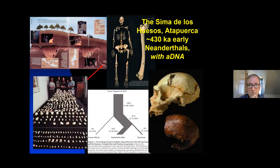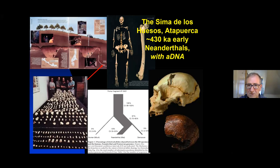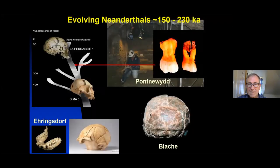The Sima de los Huesos material is so important — a wonderful sample of some 7,000 fossils found deep in this chamber in the Atapuerca cave system. Remains of probably 29 individuals, most of them adolescents or young adults, clearly show Neanderthal features morphologically: the teeth look very Neanderthal, there are Neanderthal features in the back of the skull and even the face, confirmed by DNA. We have the oldest human DNA recovered from a femur fragment from Sima de los Huesos — 430,000 years old — already clearly lying on the Neanderthal lineage. We can trace that lineage through time in fossil material from Biache in France, from Ehringsdorf in Germany, from Pontnewydd Cave in North Wales, dating from around 200,000 years ago.